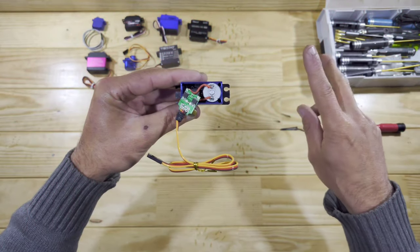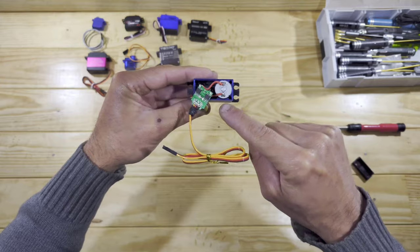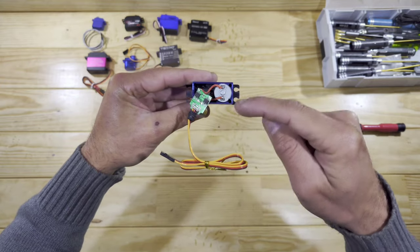There are two things what you need to do if you want to reverse a servo. The first thing is to swap the motor leads. So this lead will be soldered on this one and this lead will be soldered on that one.